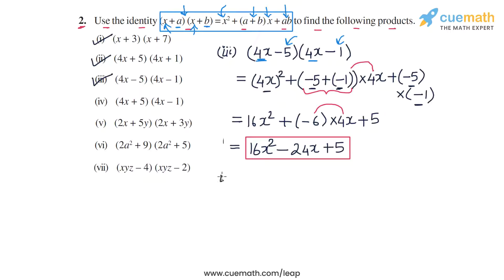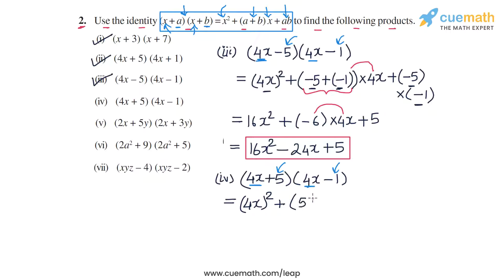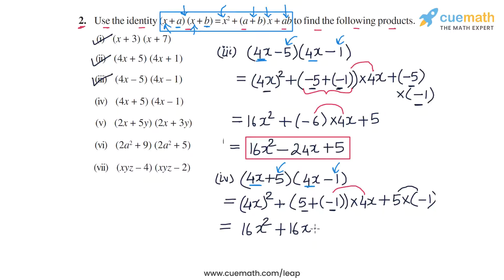In part four, we have (4x+5)(4x−1). The common term is 4x, and the non-common terms are 5 and −1. We get (4x)² = 16x². Then 5+(−1) = 4, and 4×4x = 16x. The third term is 5×(−1) = −5. So the product is 16x² + 16x − 5.